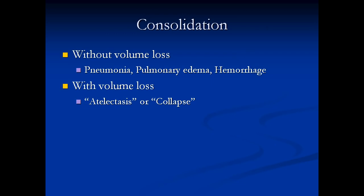Now we're going to talk about some diseases of the lung, starting with consolidation. Consolidation simply means solid lung — lung that is no longer containing air; it is of soft tissue density. There are two types of consolidation. There's consolidation that occurs without volume loss, meaning the volume of the lung is maintained. Conditions that cause this are pulmonary edema, pneumonia, and hemorrhage. In these conditions, the air spaces are all filled up with fluid — there's no volume loss, but it is soft tissue density.